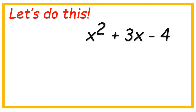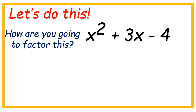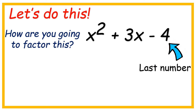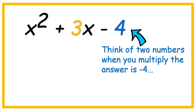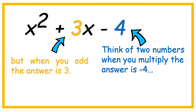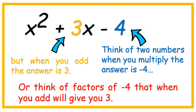Let's do this. x squared plus 3x minus 4. How are you going to factor this? First, look at the last number — negative 4 — and the middle number, which is positive 3. We're going to think of two numbers: when we multiply, the answer is negative 4, but when we add it, the answer is 3. Or think of factors of negative 4 that when you add will give you 3.